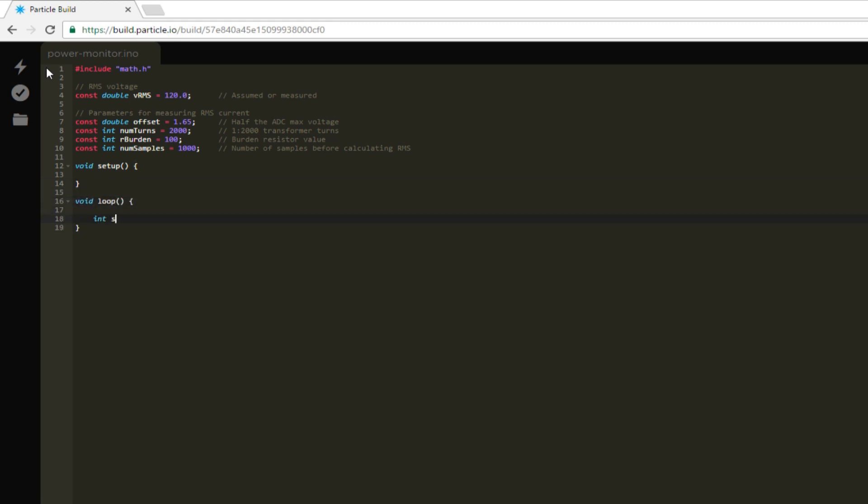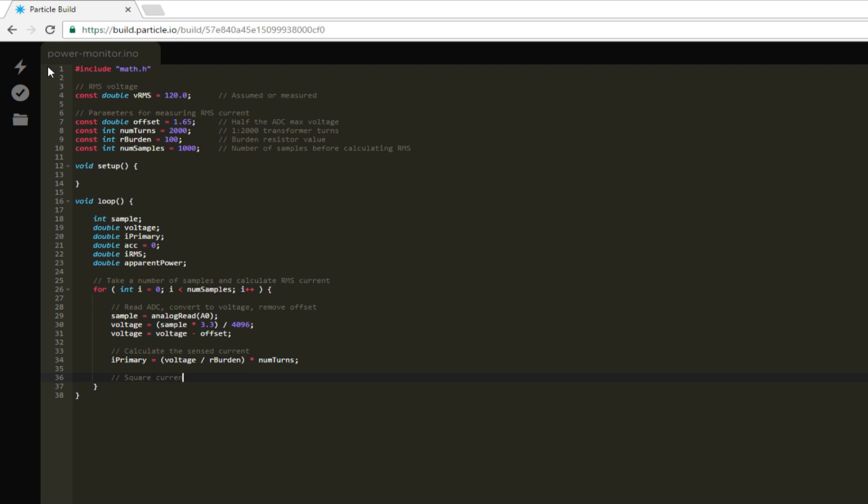In the main loop, we'll take 1,000 readings of the voltage from the CT sensor's tip, do some math to convert it to the current flowing to the appliance, and compute the RMS value. To do that, we'll need some variables. We'll do our sampling inside of a for loop. To start, read the analog voltage from A0, convert it to a voltage level by multiplying it by 3.3, and dividing the answer by 4096. We'll then subtract our voltage offset to get the real voltage across RB. We then convert the voltage to the measured AC current by dividing the voltage by the burden resistor's value and multiplying it by the number of turns in the secondary coil. We then square the current reading and add it to our accumulator value. Calculate RMS by dividing the accumulator by the number of samples taken and square rooting the result. We calculate the apparent power by multiplying RMS voltage by RMS current and publishing it as an event to the particle console. Finally, we wait 10 seconds before taking another set of samples. Save your work and upload it to the photon.